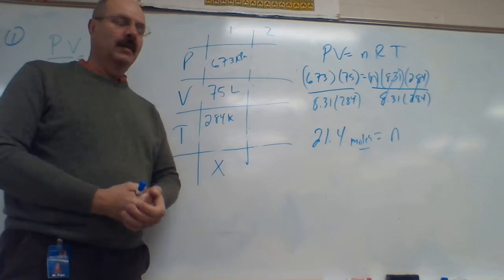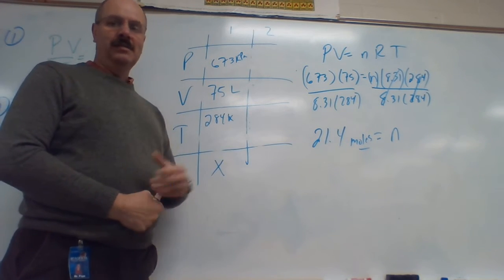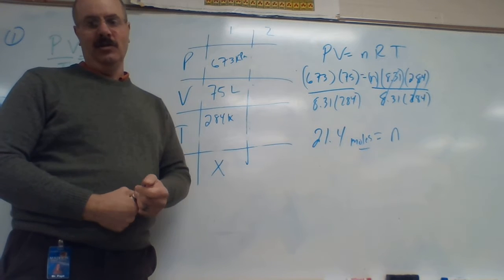You go to the store and how do you buy eggs? You buy them in dozens, right? Well, in chemistry we use something called a mole. And it's this really big number—6.02 times 10 to the 23rd. A whole bunch of them.